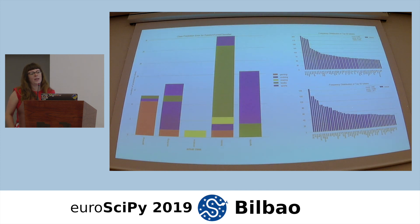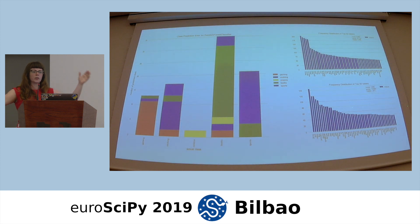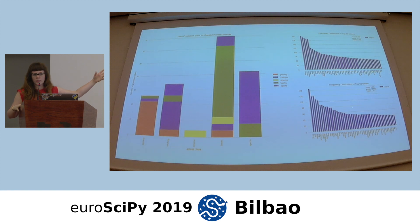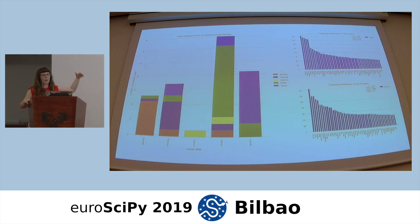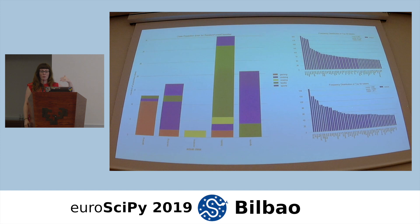Another thing we've done with Yellowbrick is engineer it to allow you to group plots together. What we're looking at is a class prediction error for a random forest classifier over a hobbyist corpus — a text data set where you're detecting classes of different documents based on words in those documents. A class prediction error plot is similar to a confusion matrix: for each class, where were you wrong and what did your model think the class was. You can actually combine the class prediction error report with frequency distributions of the top tokens for the classes where you're most wrong, helping you see if certain words are adding noise that makes it difficult to differentiate classes.